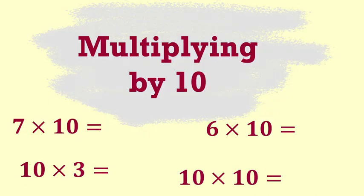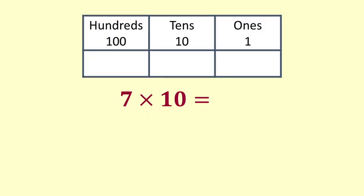Multiplying by 10. 7 times 10 is equal to what? The number 7 is in the ones column so the number is 7.